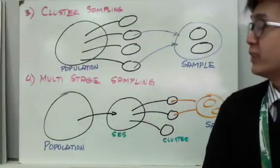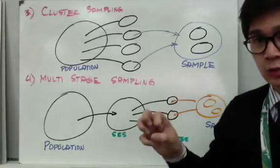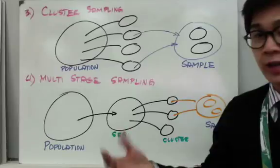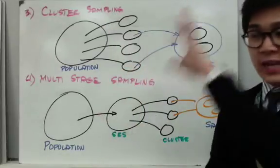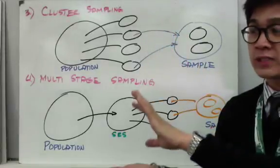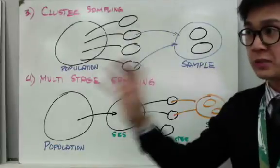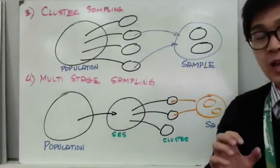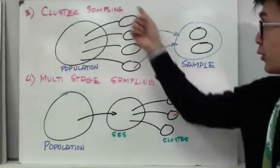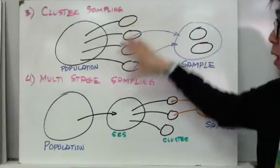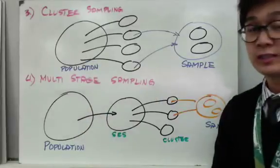In cluster sampling, you get groups of individuals from the population. For example, I create groups 1 through 10. Out of those 10 groups, I collect group 1, group 7, and group 10 to be included in my sample. That technique is cluster sampling — you group them up and then pick certain groups from the subgroups to use as your sample.